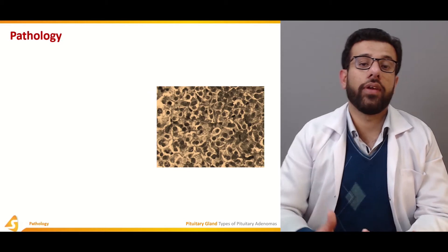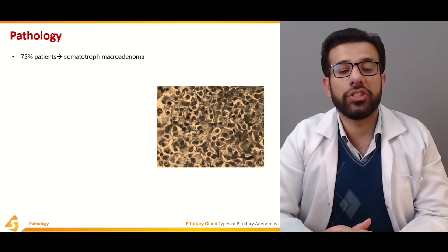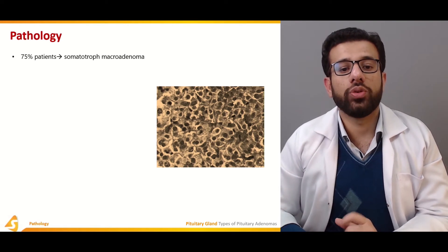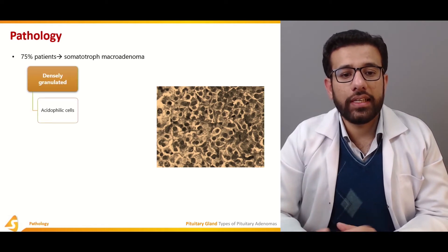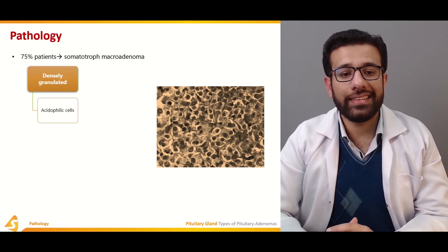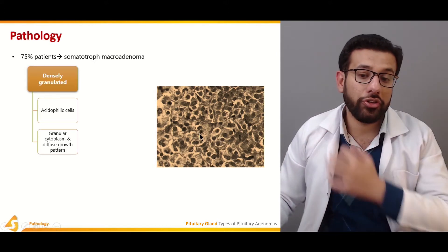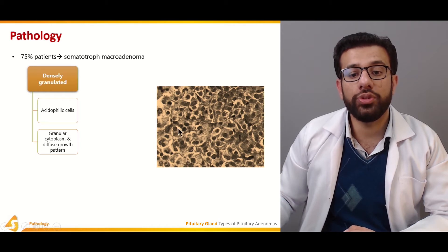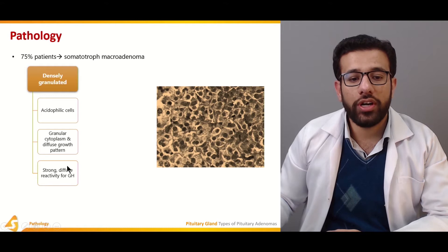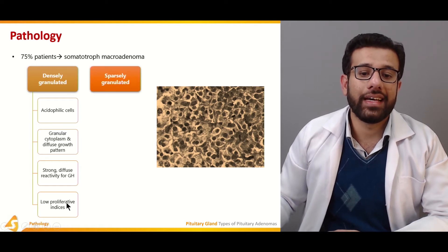Somatotroph adenomas are commonly macroadenomas, larger than 10 millimeters. About 75% of patients suffer from somatotroph macroadenomas. Morphologically, they are densely granulated with acidophilic cells and granular cytoplasm, showing a diffuse growth pattern with strong reactivity for growth hormone and low proliferative indices.